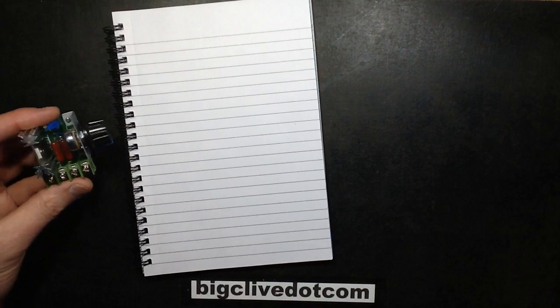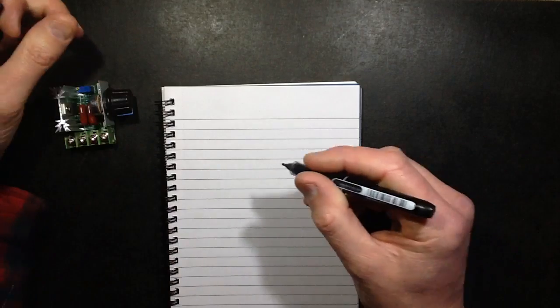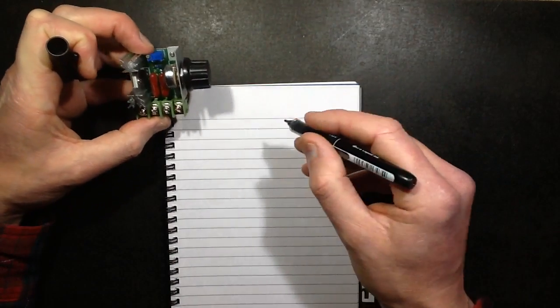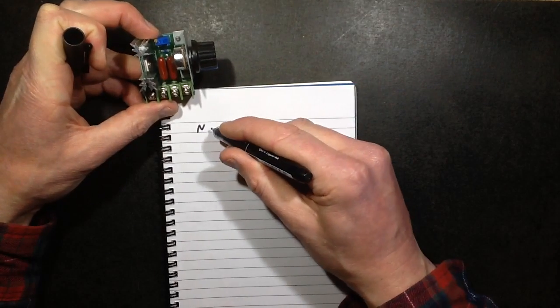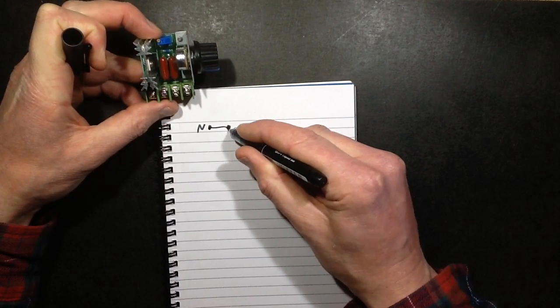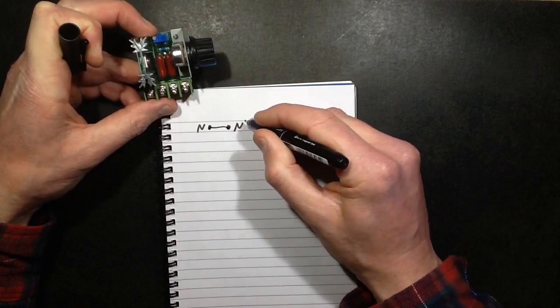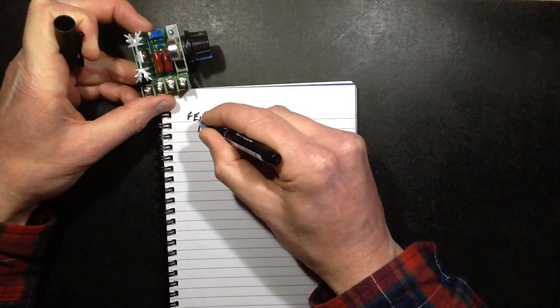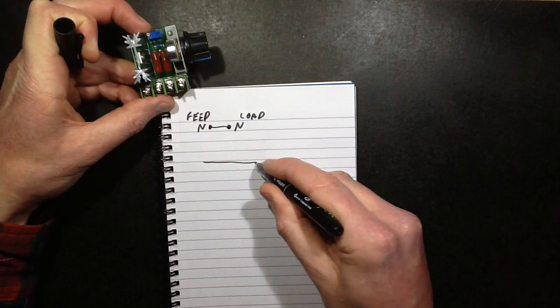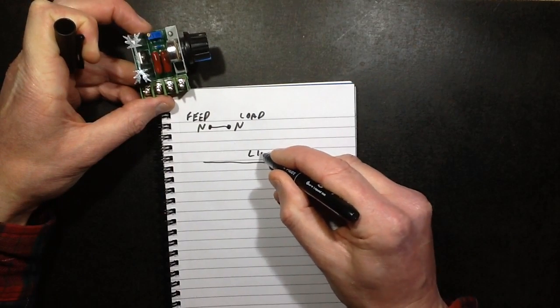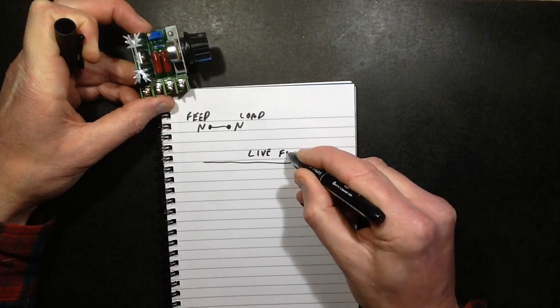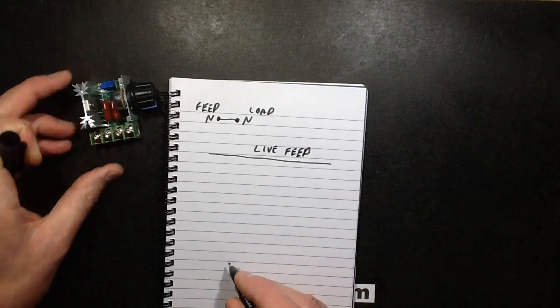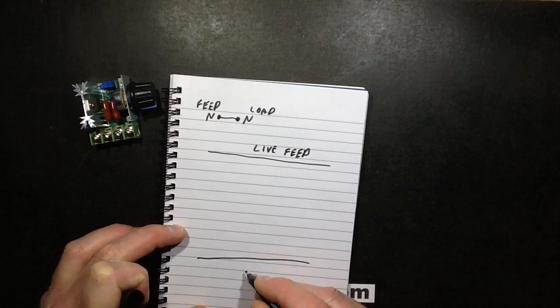I'm going to get the notepad and we'll doodle the circuit down. We've already ascertained that, say for instance, we're going to switch live through it. So the neutral and the neutral are just linked together, they're not connected. I'll just put that load and feed. However, the live, live feed, and to be honest it would work in either direction, and the live load will have the triac connected across it.